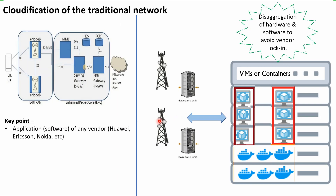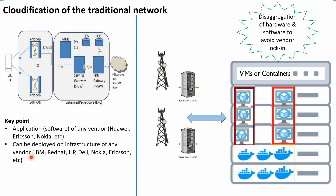With disaggregation, the application is a software image only — every box is an application or telco workload. For example, this can be an Ericsson MME, a Huawei MME, or a Nokia PGW. All these applications can be deployed on infrastructure of any vendor — meaning the Linux servers, routers, and switches of IBM, Red Hat, HP, Dell, Nokia, Ericsson, or anyone. So now we have telecom application providers as software images and infrastructure providers as data centers and Linux servers. This whole process is called NFV — Network Function Virtualization.